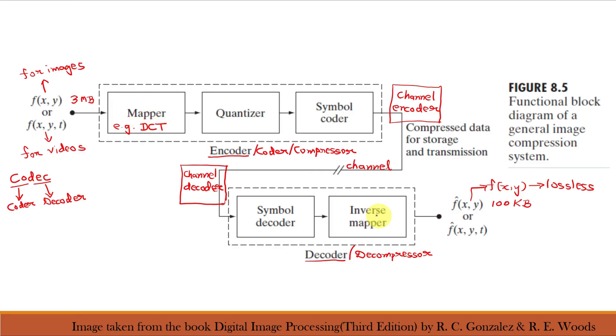So, if this is DCT, the inverse mapper will be inverse DCT. The second stage or quantizer block reduces the accuracy of the mapper's output in accordance with some predefined fidelity criterion. This stage reduces the psycho-visual redundancy in the image. This operation is irreversible and hence it must be omitted when error-free compression is desired.